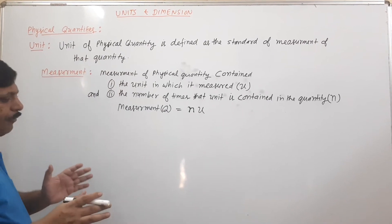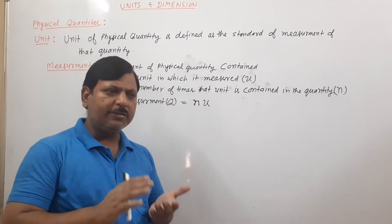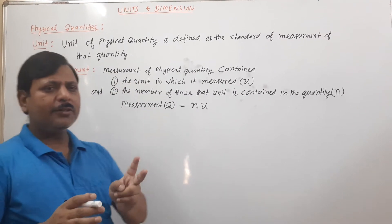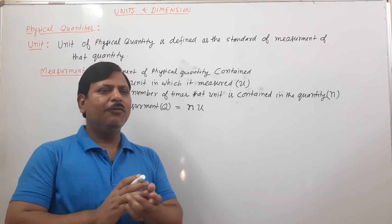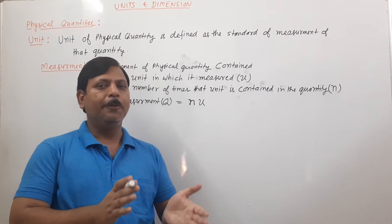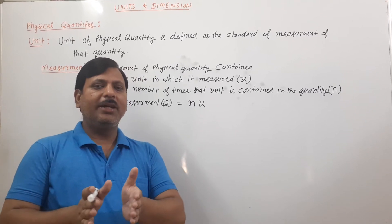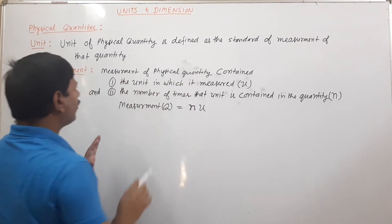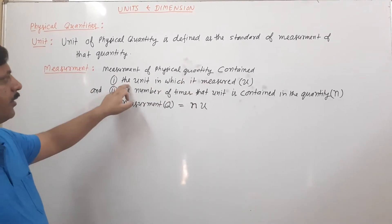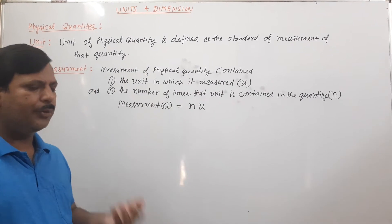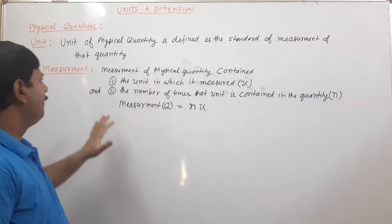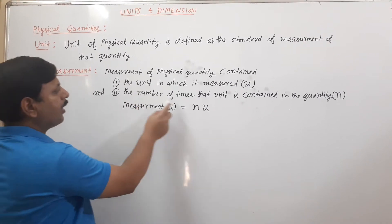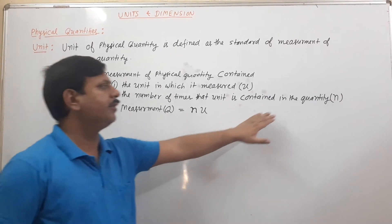If we want to measure a physical quantity, we need two things: one is the unit and the second is the numerical value. The combined numerical value and unit is called measurement. Measurement of a physical quantity contains first the unit in which it is measured, and second the numerical value — the number of times that unit is contained in the quantity.